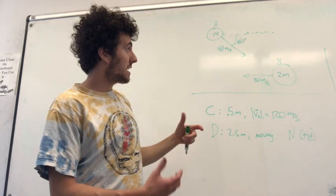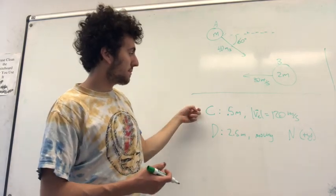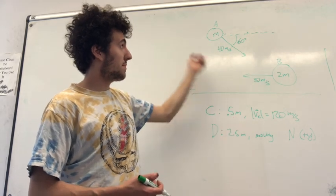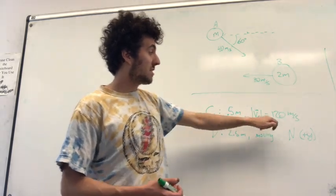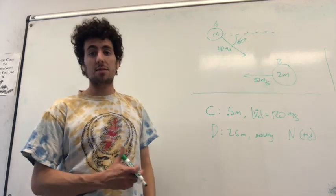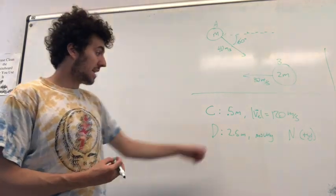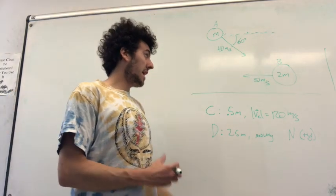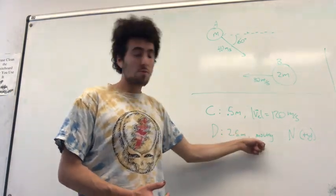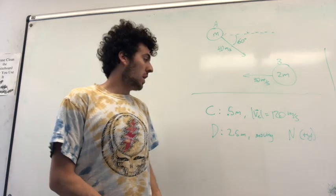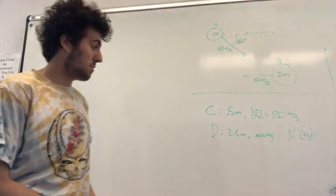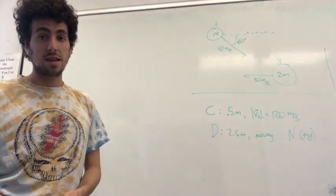They collide, and A splits off into two pieces. One of them goes off on its own, asteroid C, with a mass of 0.5M, half of A. We know its speed is 120 meters per second, but we don't know its direction. Asteroid D is the other half of A that sticks to B, and those travel off together. We know they're moving north, but we don't know the magnitude of that velocity or momentum, so we need to know its speed.